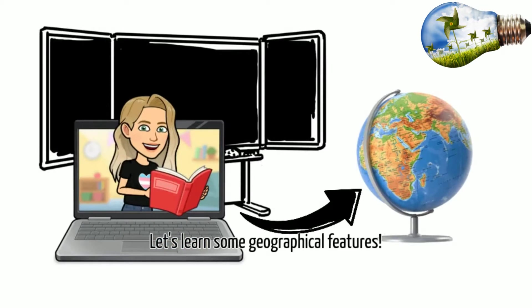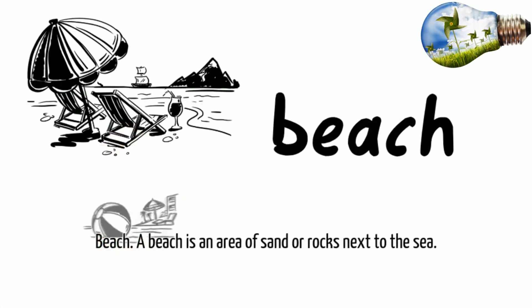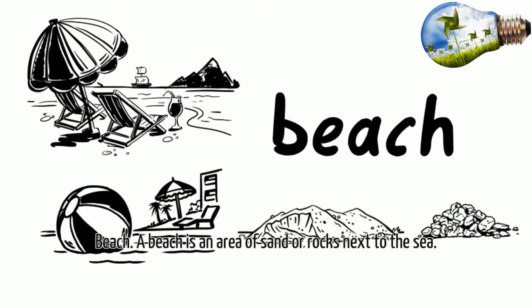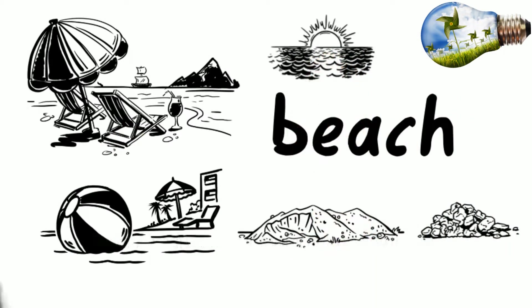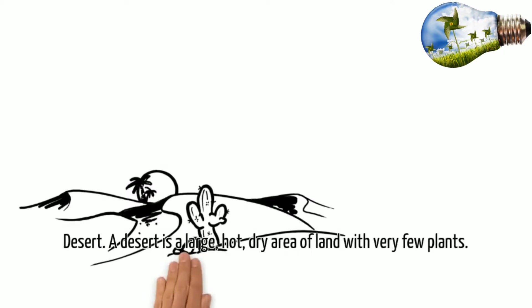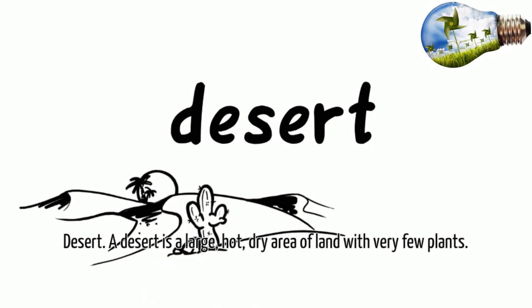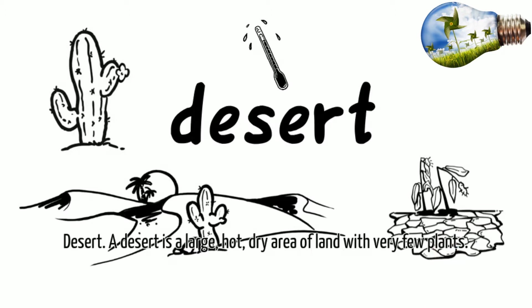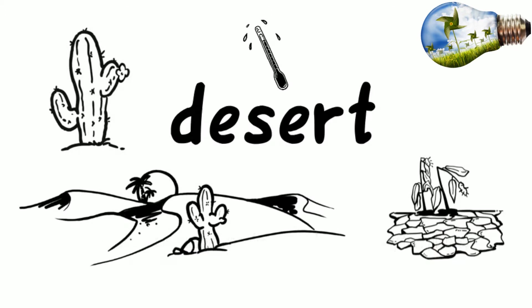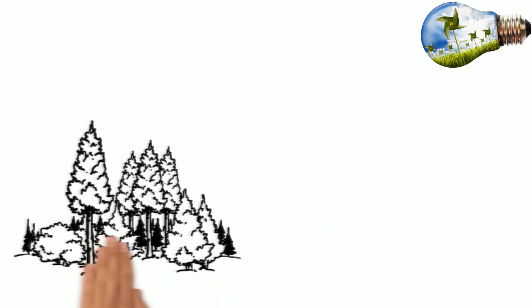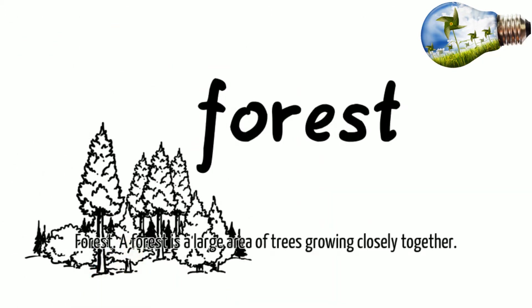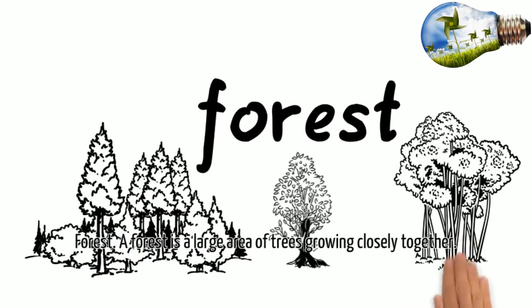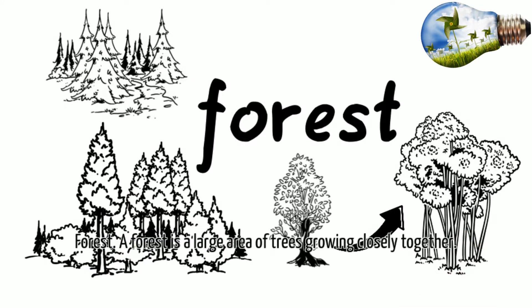Let's learn some geographical features. Beach. A beach is an area of sand or rocks next to the sea. Desert. A desert is a large, hot, dry area of land with very few plants. Forest. A forest is a large area of trees growing closely together.